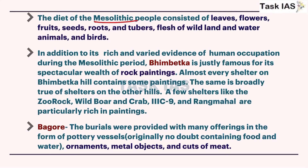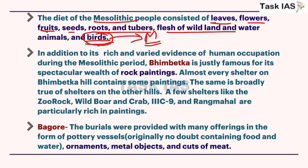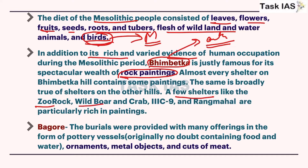The diet of Mesolithic people consisted of leaves, flowers, fruits, seeds, roots, flesh of wild animals, and birds - remember, birds were not present in the Paleolithic diet, these are features of Mesolithic. In addition to its rich and varied evidence of human occupation, Bhimbetka provides some artistic expression in the form of rock paintings. A few shelters like Jurok, Wild Boar, Crab, and Orang Mahal - these are different shelter sites in Bhimbetka producing different kinds of paintings which reflect human innovation of that time.